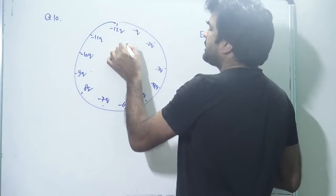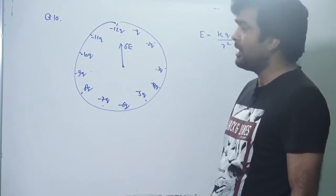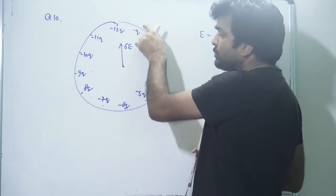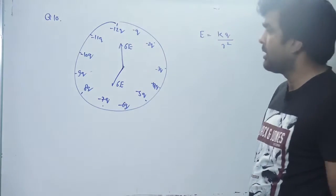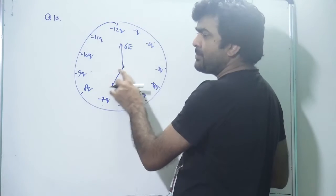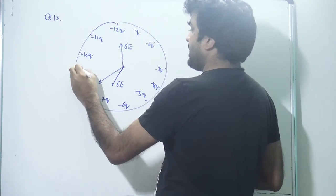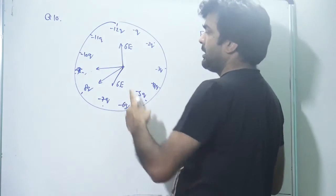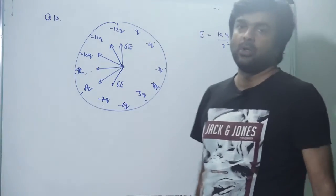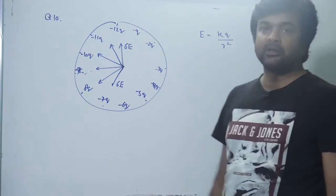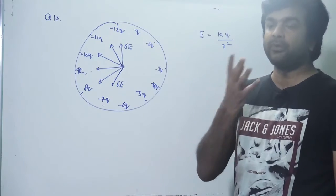Similarly, comparing -7Q and -1Q: 7E and 1E antiparallel gives a resultant of 6E towards -7Q. For 8 and 2: net 6E; for 9 and 3: net 6E; for 10 and 4: net 6E; for 11 and 5: net 6E. So we have accounted for all charges, and we now have 6 vectors each of magnitude 6E, and we need to find the direction of their resultant.